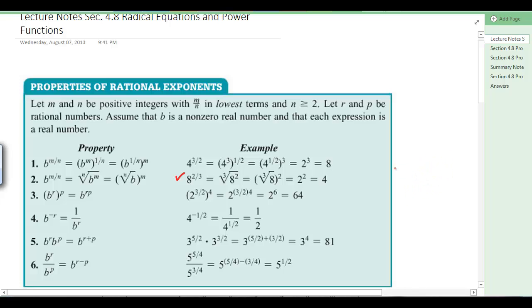Number 4 talks about negative exponents. And negative exponents are about position. So if you have 4 to the negative 1 half, it's the same as 1 over 4 to the positive 1 half. If you're on the top, you go to the bottom. If you're on the bottom and it's negative, you go to the top in order to make it positive.